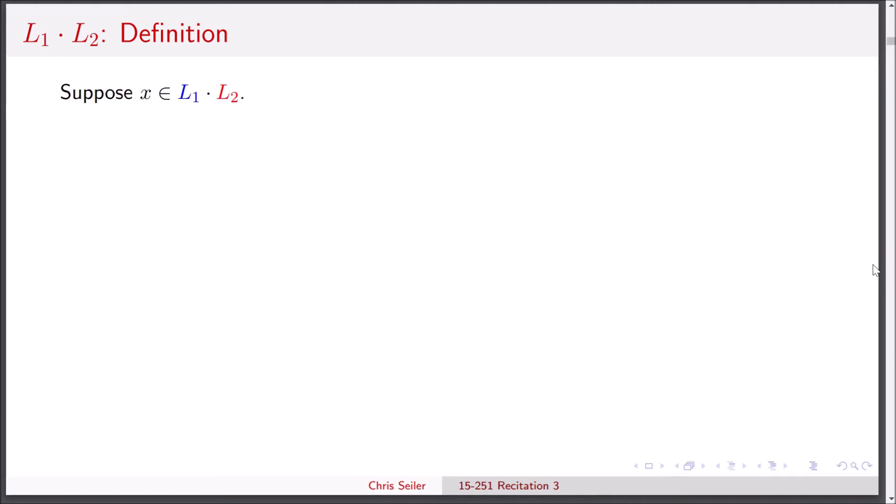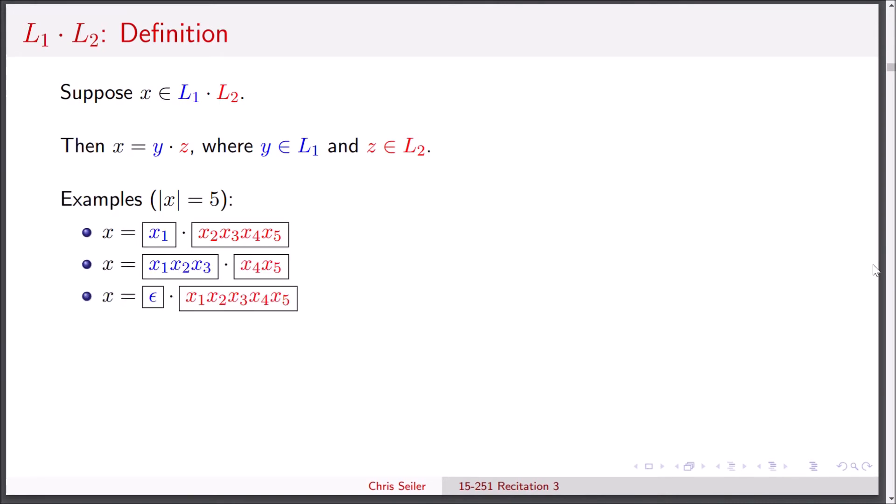Let's recall the definition of L1 concatenate L2. If we have some x in this language, then it can be split somewhere where x equals y concatenate z, y is in the first language and z is in the second language. Let's look at some examples of how x could be split. Notice also that the empty string counts as a potential y here and the empty string counts as a potential z here.